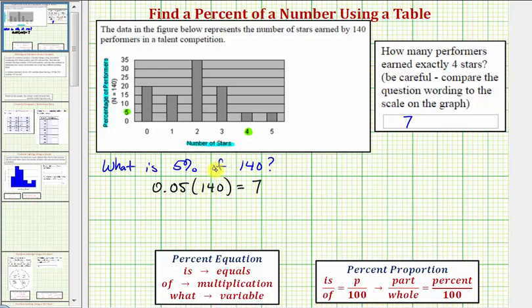Let's also answer this question more formally using a percent equation. We use these key words to set up our equation: is means equals, of means multiplication, and what or what number or what percent represents the unknown, so we write down a variable.